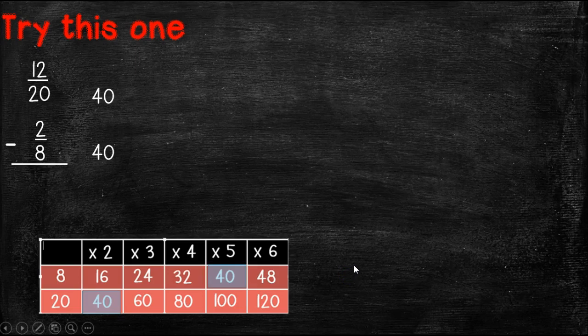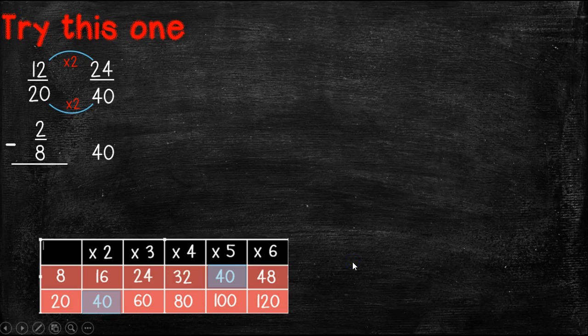So now we need to change the numerators too, because whatever we do to the denominator, we do to the numerator. So what did we do to the 20 to get to 40? Well, we multiplied it by 2. So we have to do the same thing to our numerator. So 12 times 2 is 24.